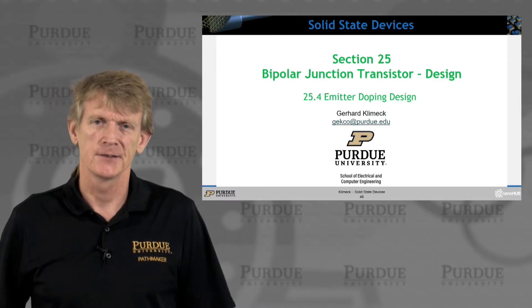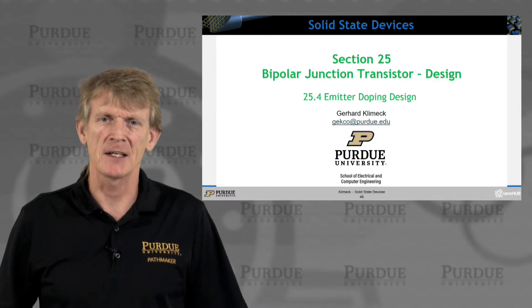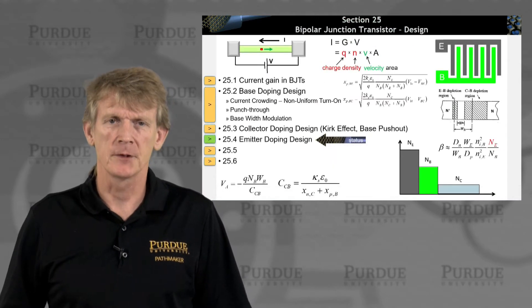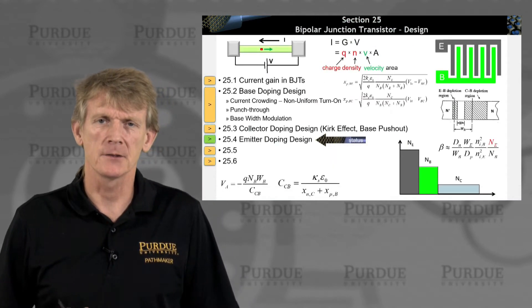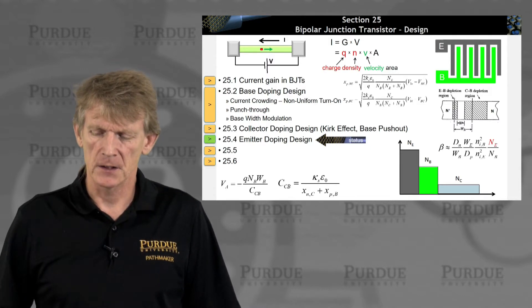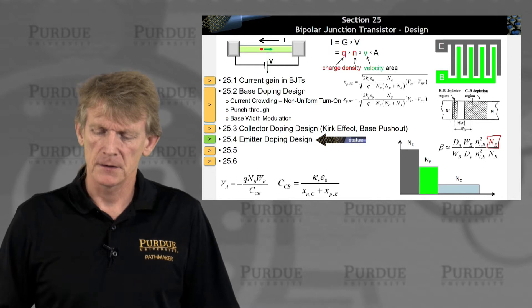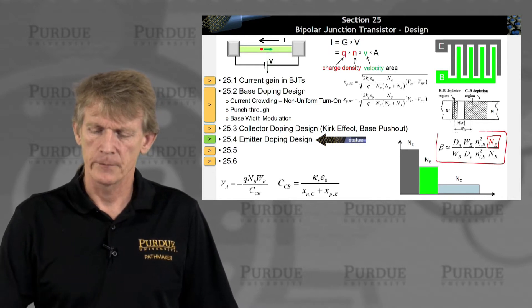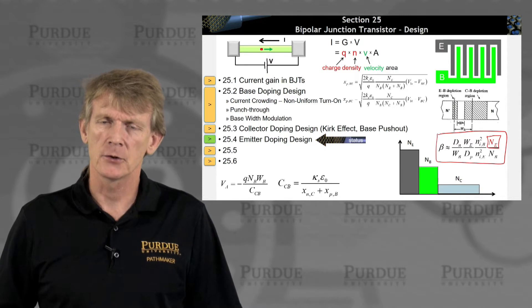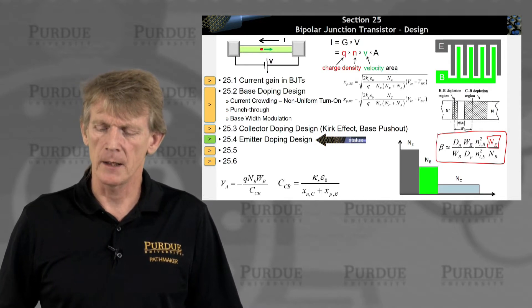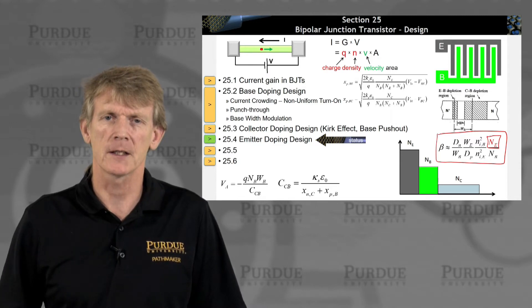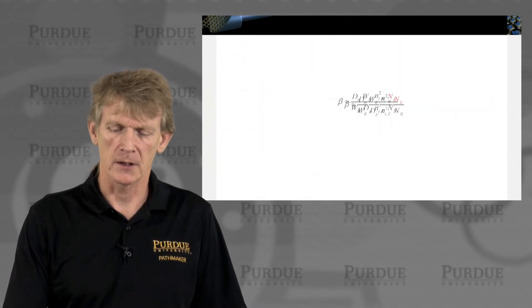All right, some more doping designs, this time emitters. Let's look at the emitter doping and what can be done to improve device performance. This is driven by this simple expression here for the current gain, and you could increase the current gain by ramping up the doping in the emitter. Seems rather straightforward. Let's look at a couple of effects that are not so straightforward.